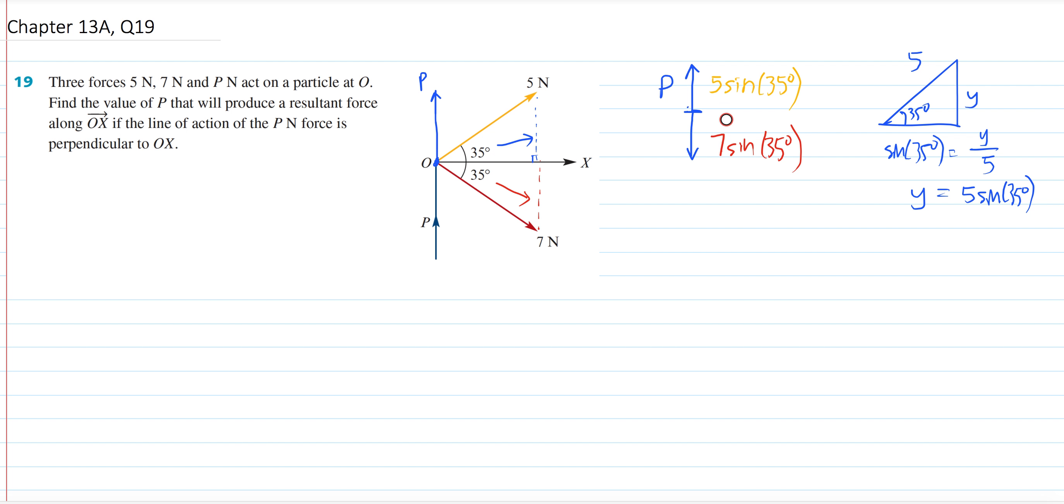Now, obviously, 5 sine 35 is less than 7 sine 35, so P would just be that difference. Whatever the difference is, that would be P, because if P is equal to that difference, then what we get is P plus 5 sine 35, then obviously that would equal to 7 sine 35, which is what we want. We want the forces going vertically up to be the same as the force going vertically down, so that it doesn't move up or down at all. They balance each other out.